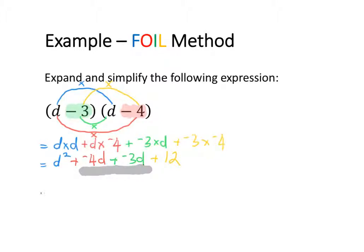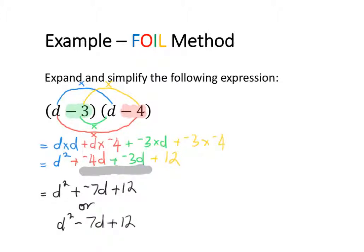So my simplified answer is going to equal d squared, and negative 4d and negative 3d will add together to give me negative 7d, plus 12. Or I can write that as d squared minus 7d plus 12. So the simplified answer to my original expression is d squared minus 7d plus 12.